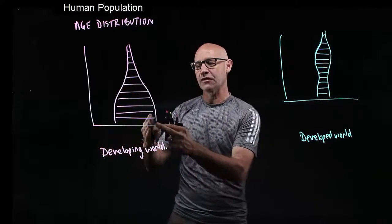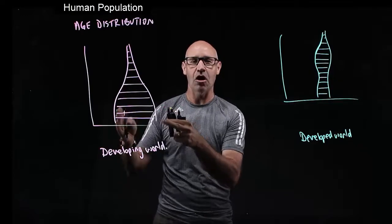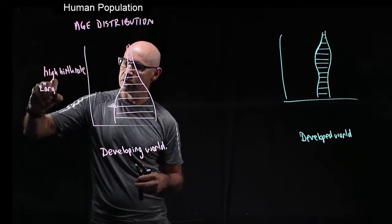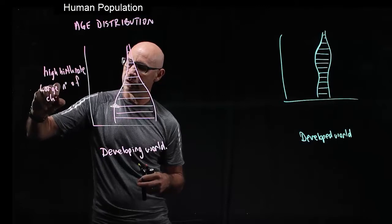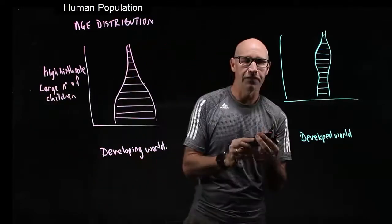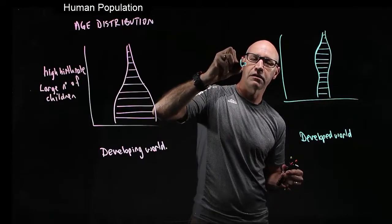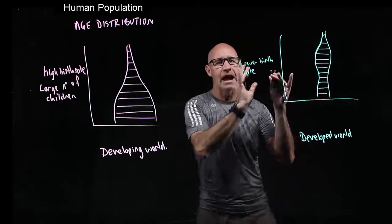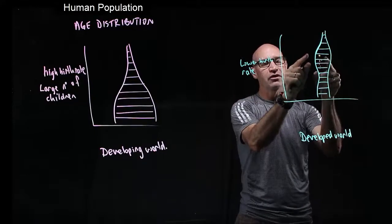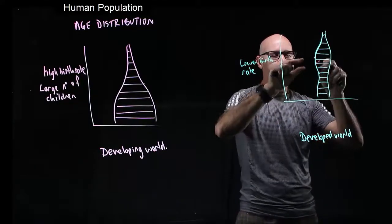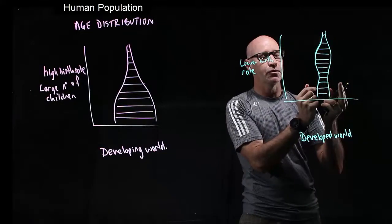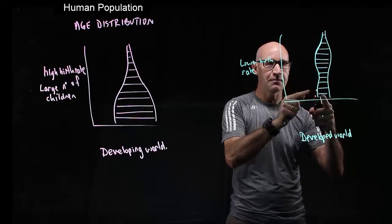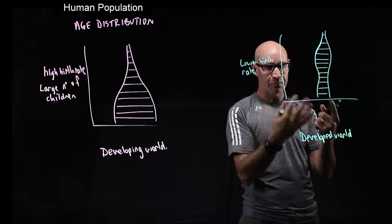In the developing world we see that there's a large number of children and a high birth rate — those are really the two key things. In the developed world we've got a lower birth rate and an ageing population, because the swelling here is the baby boomers moving towards old age and leaving the workforce. The concern is that we don't have many young people moving up into the workforce to support the elderly.